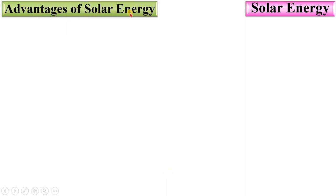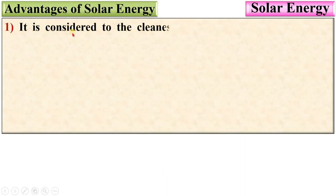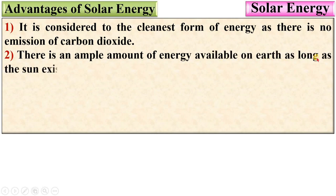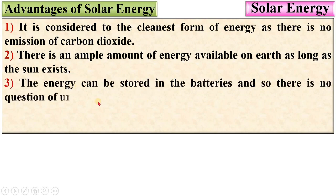Advantages of solar energy. First, it is considered the cleanest form of energy as there is no emission of carbon dioxide. Very important because everybody knows that carbon dioxide is the main pollutant in the environment. There is an ample amount of energy available on earth as long as the sun exists. That means solar energy is a renewable energy source.